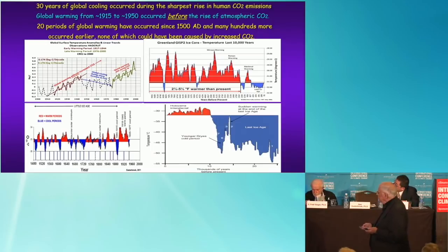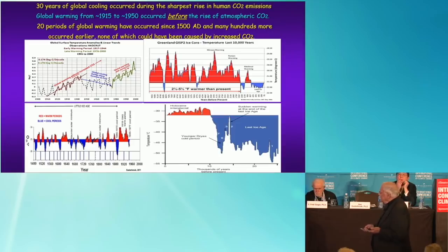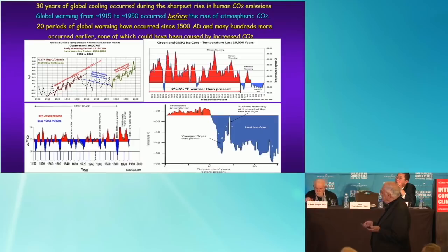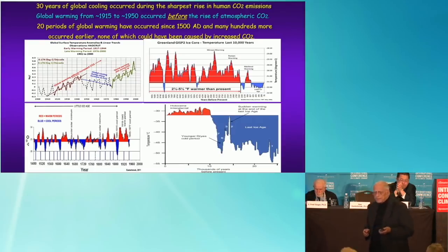In this graph, I plotted temperatures from isotopic evidence in ice cores. The red peaks are periods of global warming, and there are 20 of them on this graph, dating back to about 1500. If you go back even farther — back 10,000 years — this is 10,000 years ago and this is the present.